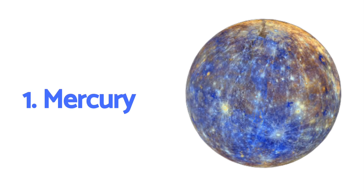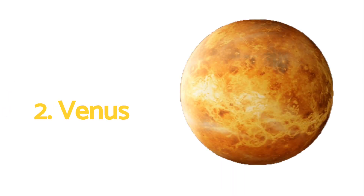Mercury. This is Mercury. What planet is this? Yes, correct! Mercury is the closest planet to the Sun and the smallest planet in our solar system.